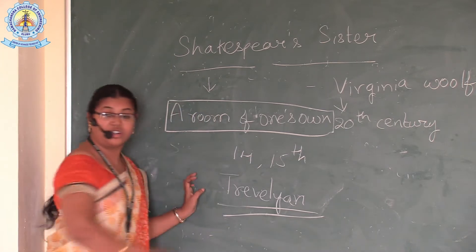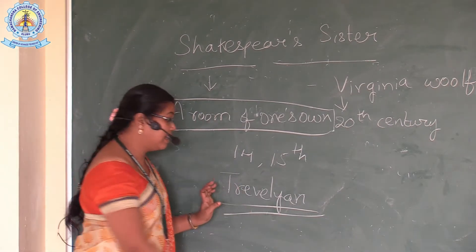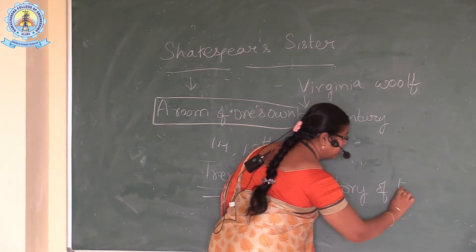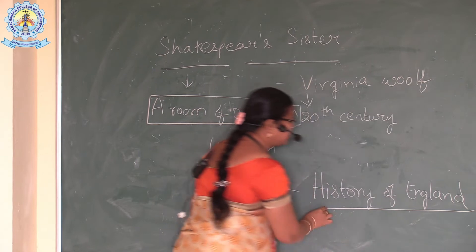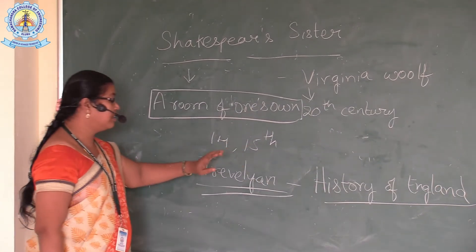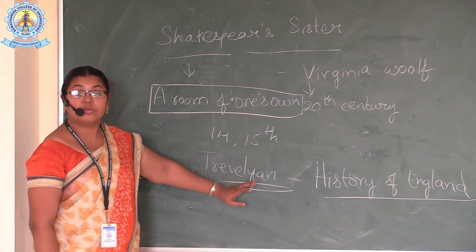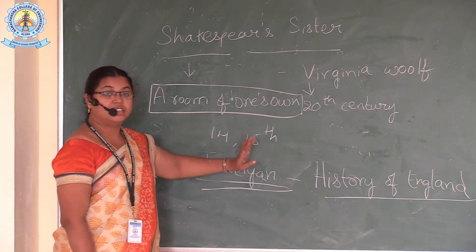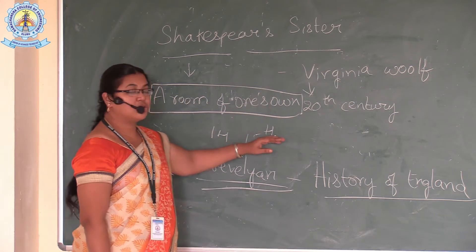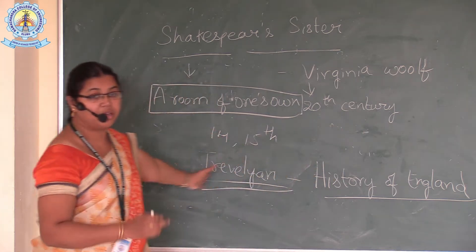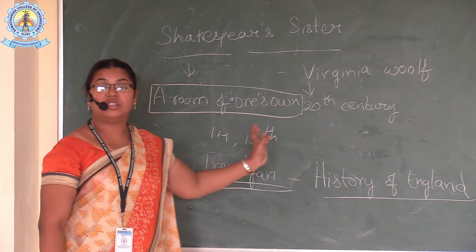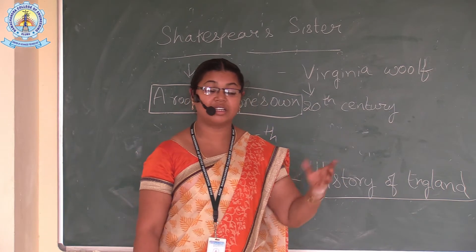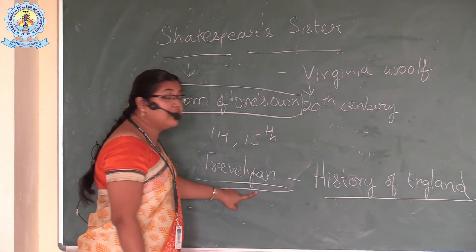Trevelyan is a great historian who has written many famous books, including the History of England. When she started reading this History of England, Trevelyan projected many issues related to the 14th and 15th centuries. She searched for what he had written about women in those centuries, but found no information about women.